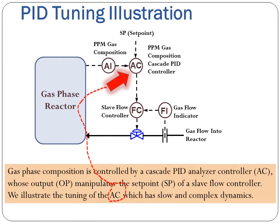Gas phase composition is controlled by a cascade PID analyzer controller (AC), whose output (OP) manipulates the setpoint (SP) of a slave flow controller. We illustrate the tuning of the AC, which has slow and complex dynamics.